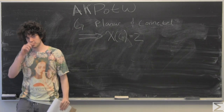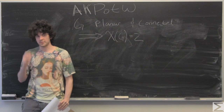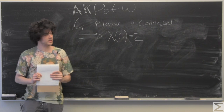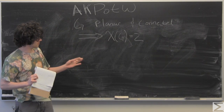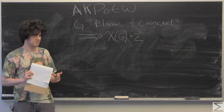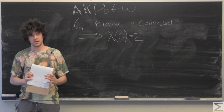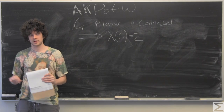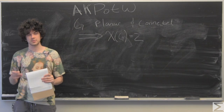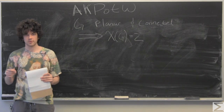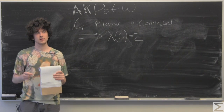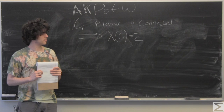You probably are familiar with the Euler characteristic when talking about polyhedra, and so that's what we're going to base our proof on today. The Euler characteristic is the vertices minus the edges plus the faces of a graph or polyhedra.